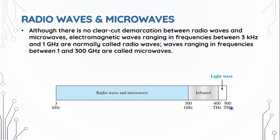The light waves range is 400 GHz to 900 THz. We can see a clear-cut image of the figure showing that radio waves span 3 kHz to 1 GHz, and microwaves span 1 GHz to 300 GHz.